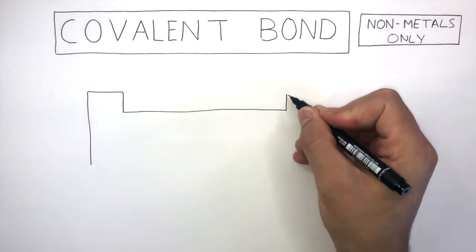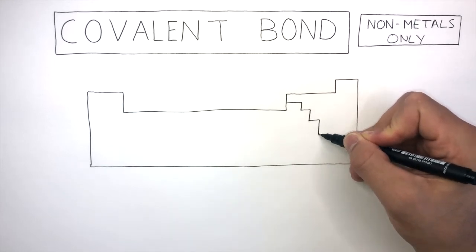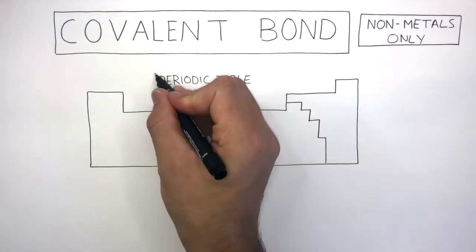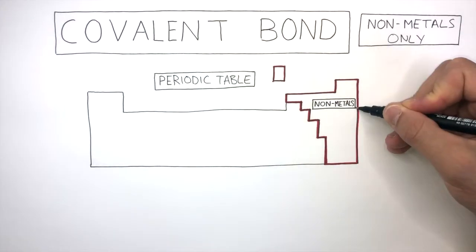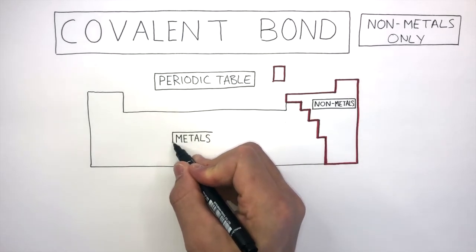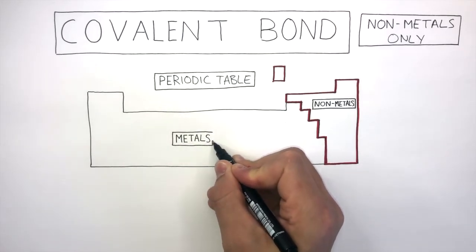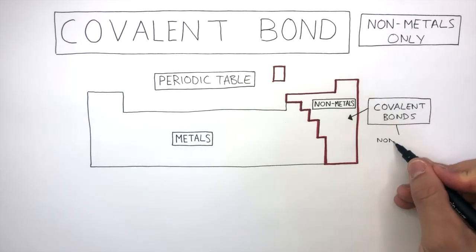To identify covalent bonding in any substance, you need to know where to find non-metals in the periodic table. This is the stepped line. Non-metals are found to the right and metals are found to the left. The box above is hydrogen which is also a non-metal. So covalent bonds only ever happen between non-metal atoms found in this section here.